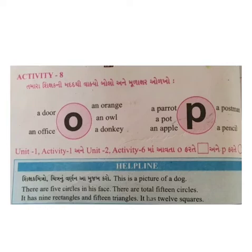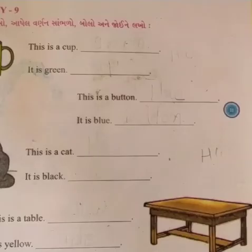विद्यार्थियो, O alphabet अने P alphabet. जे पन words आपेला चे, ए words माँ O ओळ ખ્યા पछी तेना फर्ते square, इटलेके चोरस करवानू छे. अने P फरते, इटलेके P ओળ ख्या पछी तेना फरते circle, एटलेके गोळ करवानू छे. अझे इटला पण words आपेला छे, ते words माँ O अने P alphabet ओळखी अने सुचना मुजाब कामकरवानु छे.